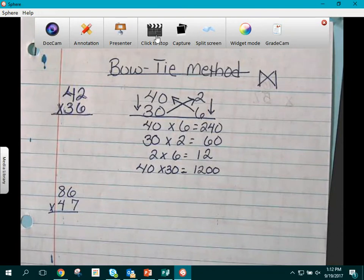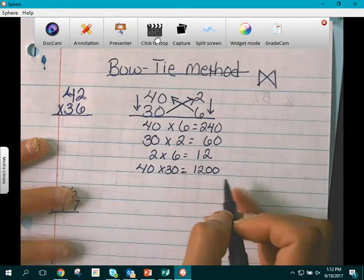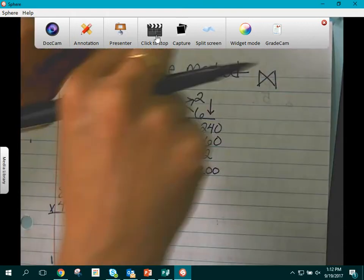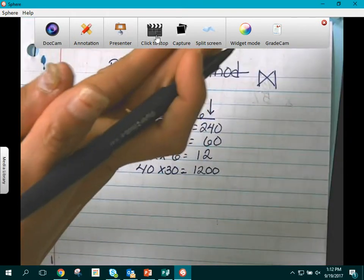Now the students are not finished. This is what we call breaking apart. So they have broken up the part of the value. From here we tell the kids what they break apart they are going to have to put together.